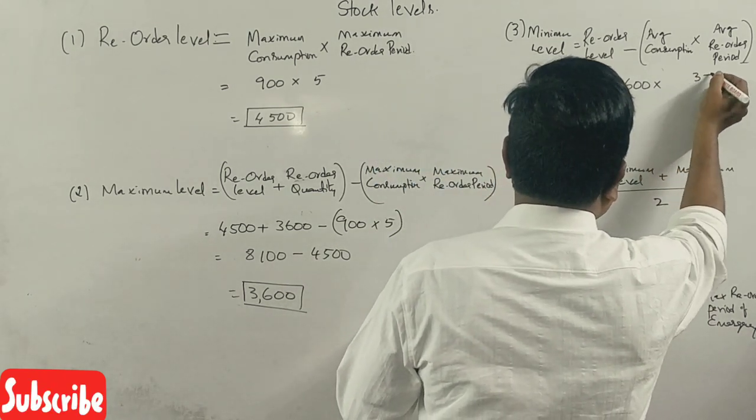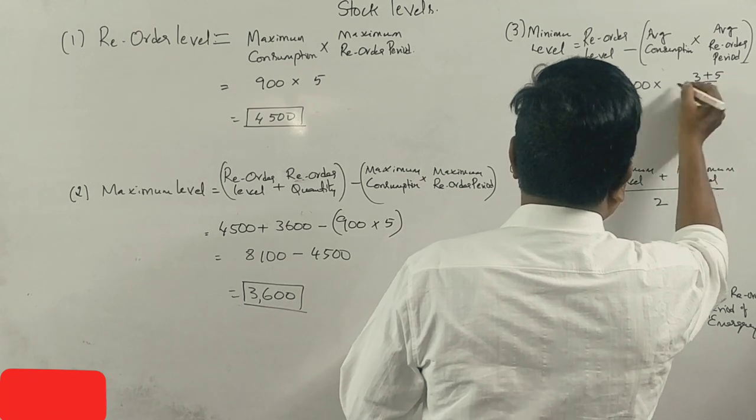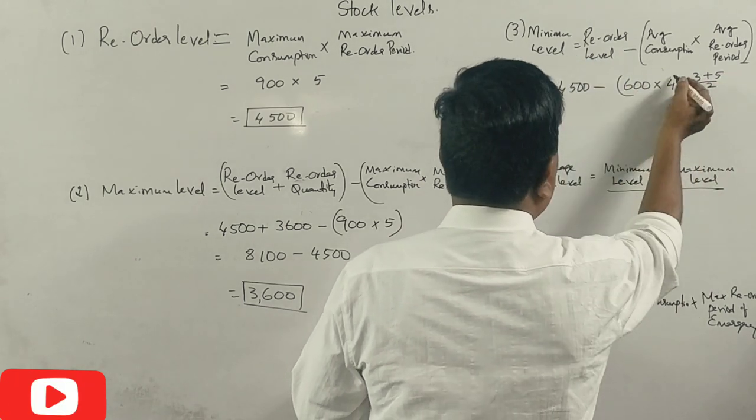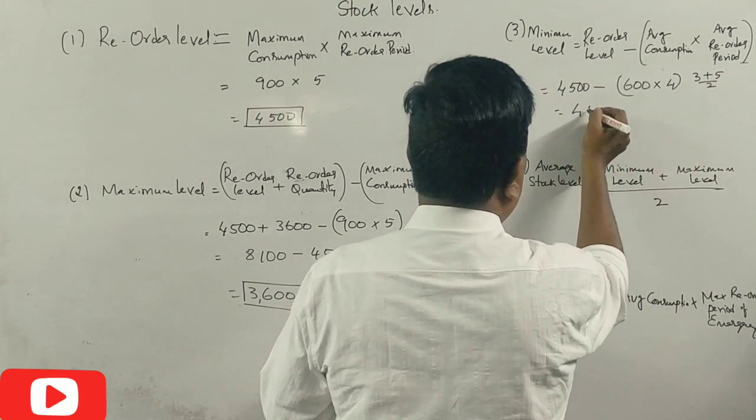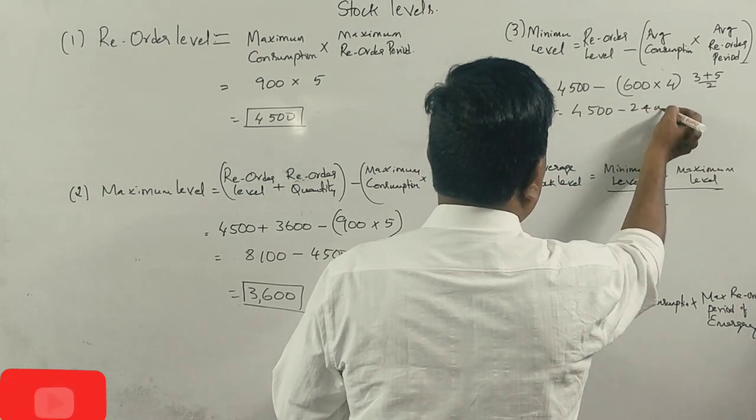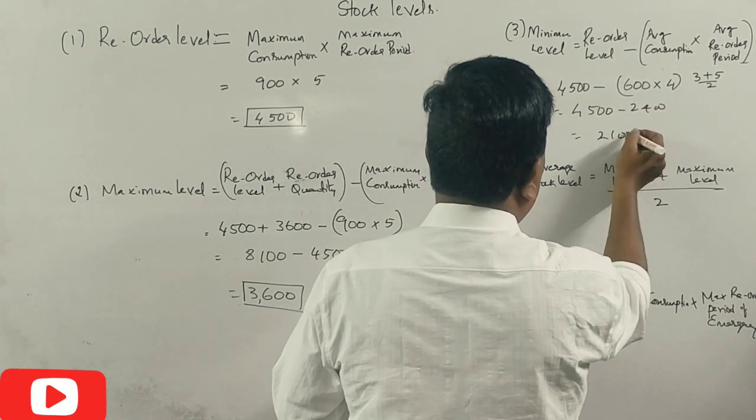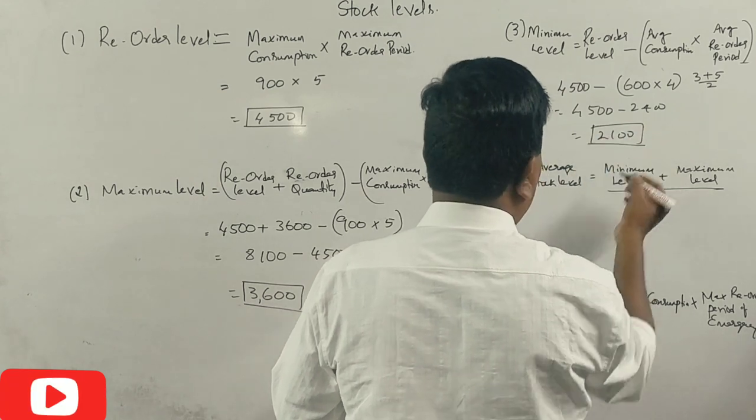3 plus 5 divided by 2 is 4. Correct? So 4500 minus 2400 comes to 2100 is the answer.